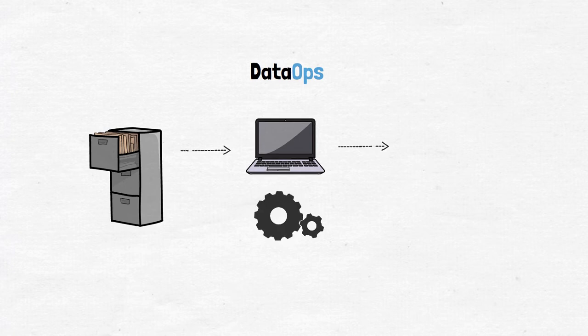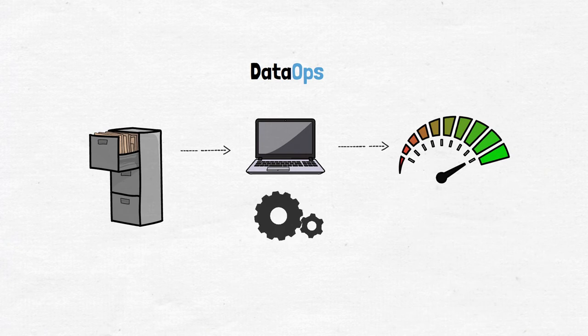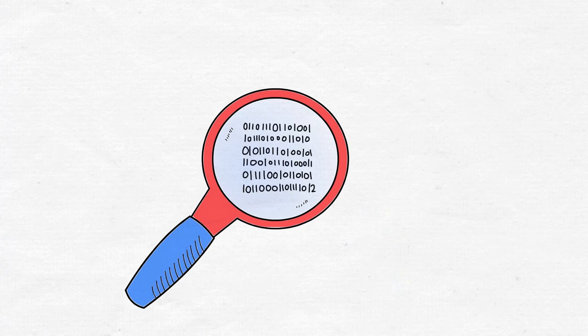Data ops is a set of practices that bring speed, agility, and compliance to an organization's data processes. This lets businesses gain insights from their data faster and more efficiently.